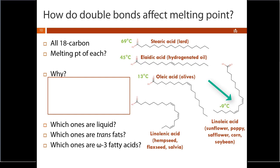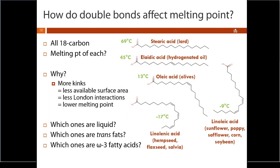Safflower oil has two cis double bonds, giving a melting point of -9°C. Hemp seed or flaxseed oil has three cis double bonds, giving a melting point of -17°C. The range is -17 to 69°C for fatty acids all having the same number of carbons. The reason is that cis double bonds put kinks into the fatty acid chains, so they can't pack together as tightly. Less surface area means fewer London dispersion forces, which gives a lower melting point. More kinks in the chain means harder to pack, less surface area, and lower melting point.